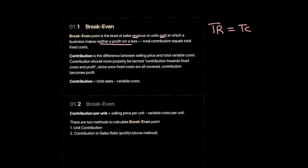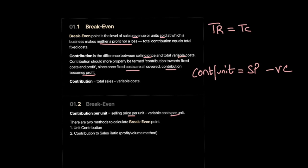Another important marginal costing concept is contribution. Contribution is basically the difference between selling price and variable cost. It is the money that is left with the firm after it has paid off its variable cost. The firm will use this contribution to cover fixed cost, and the remainder becomes its profit. Contribution per unit is selling price per unit minus variable cost per unit.